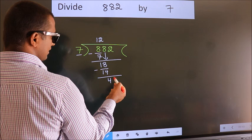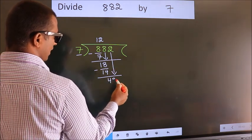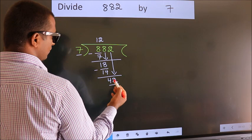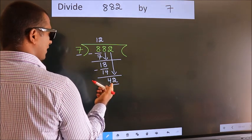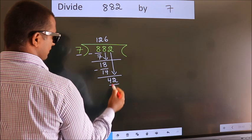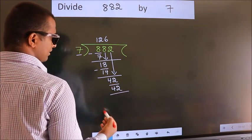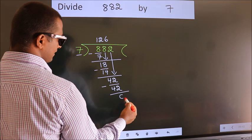After this, bring down the beside number. So, 2 down. So, 42. When do we get 42? In 7 table, 7 6 42. Now, we subtract. We get 0.